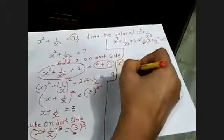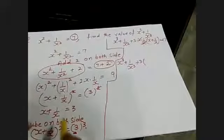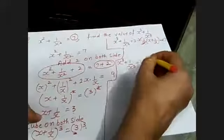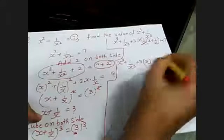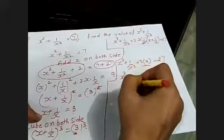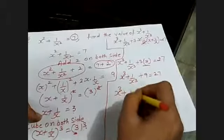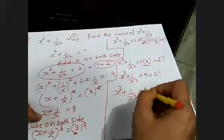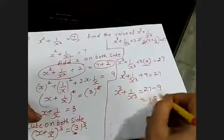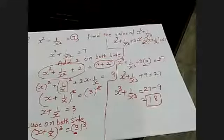Cancel x with x. So you get x cube plus 1 upon x cube plus 3 times the value of x plus 1 upon x, which is 3, so 3 times 3 equals 9. Therefore x cube plus 1 upon x cube plus 9 equals 27, and x cube plus 1 upon x cube equals 27 minus 9, which is equal to 18.